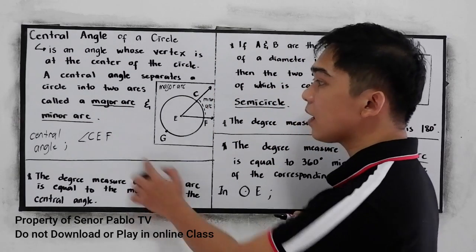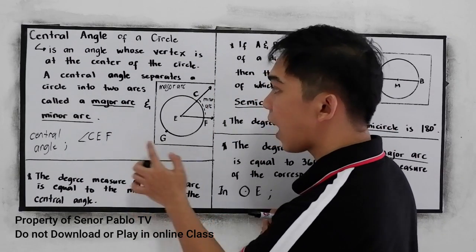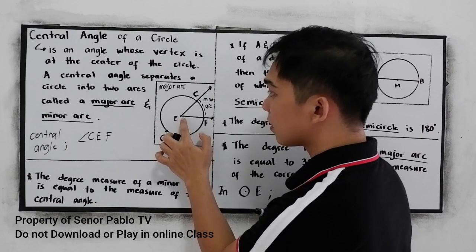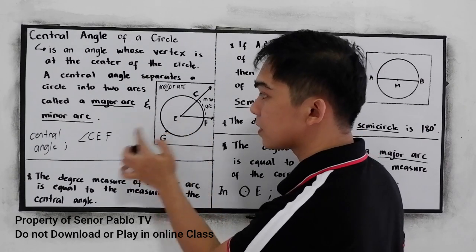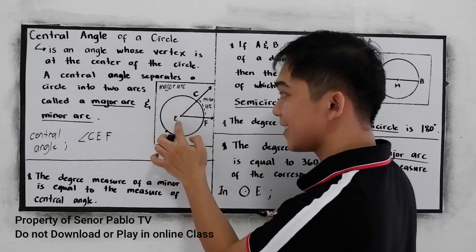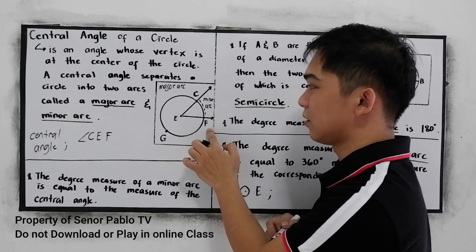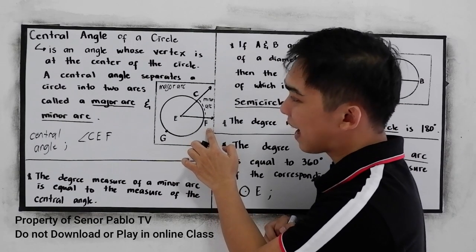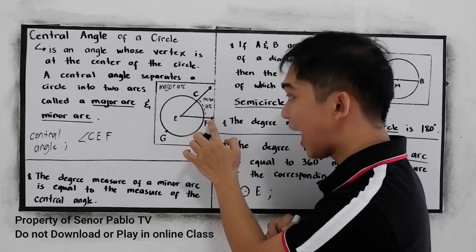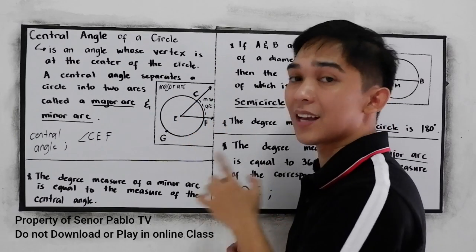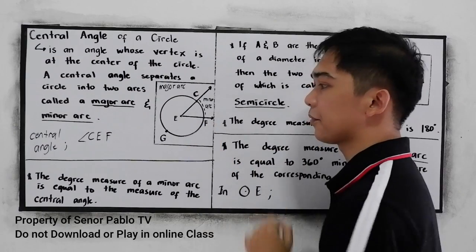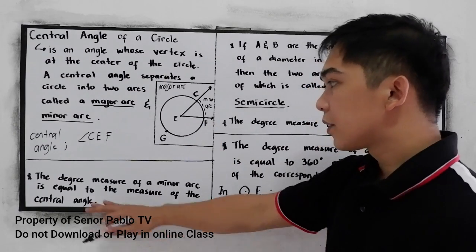In naming a central angle, the center point must be in the middle. So C, E, F. Do not name it as E, C, F — that is not an angle anymore. So again, angle CEF. Take note: